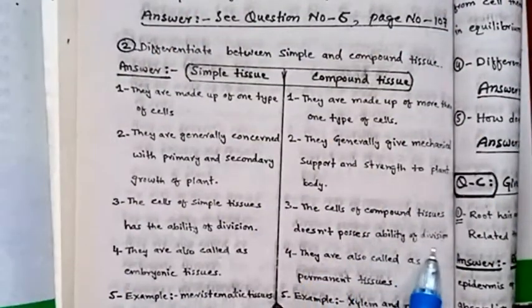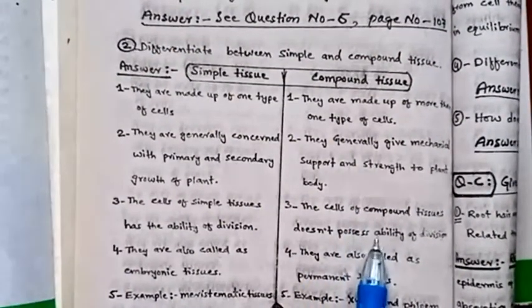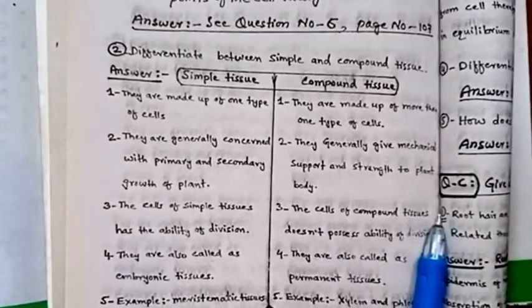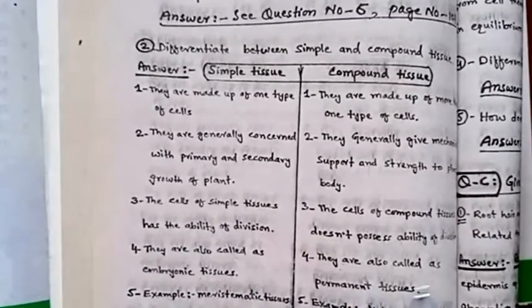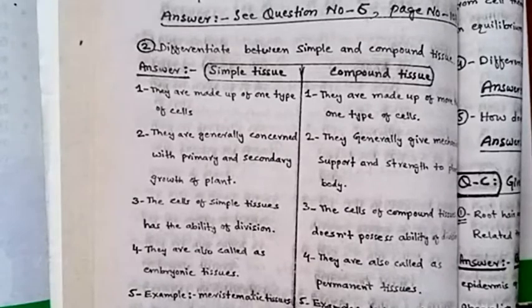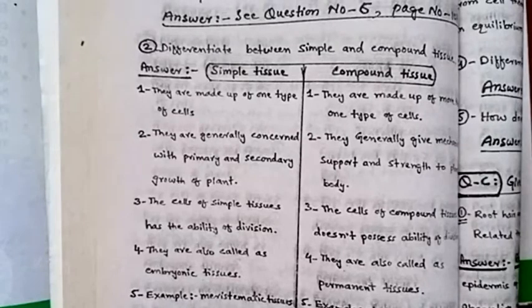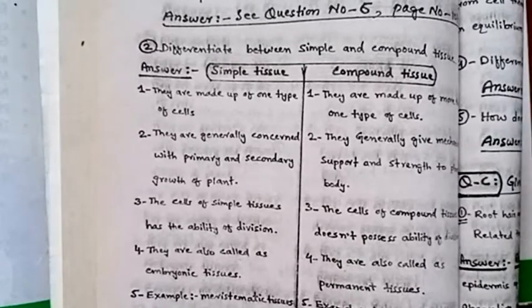Whereas the cells of compound tissue do not possess the ability of division. They are also called embryonic tissues, whereas compound tissues are called permanent tissues.